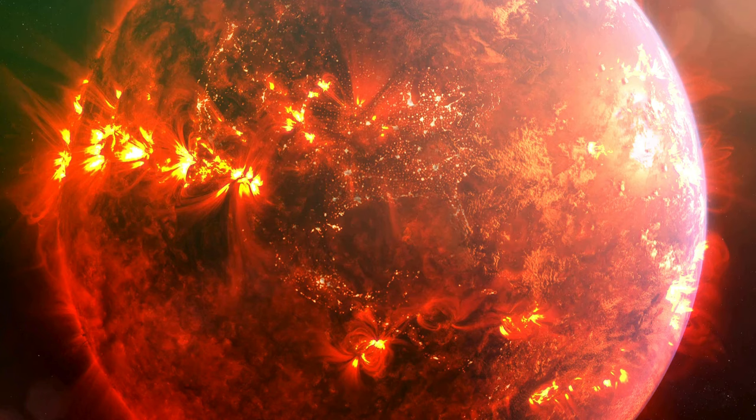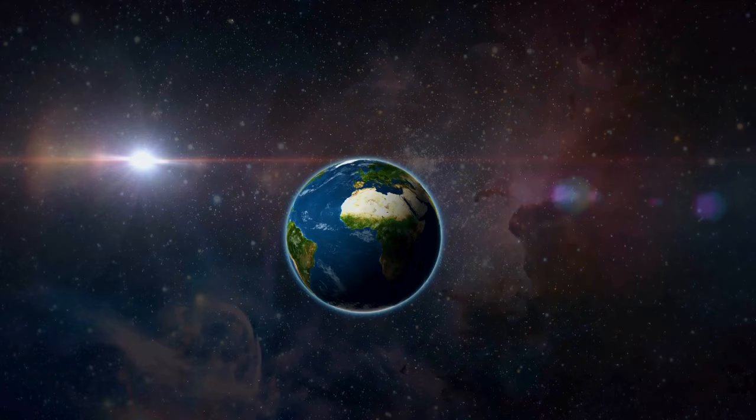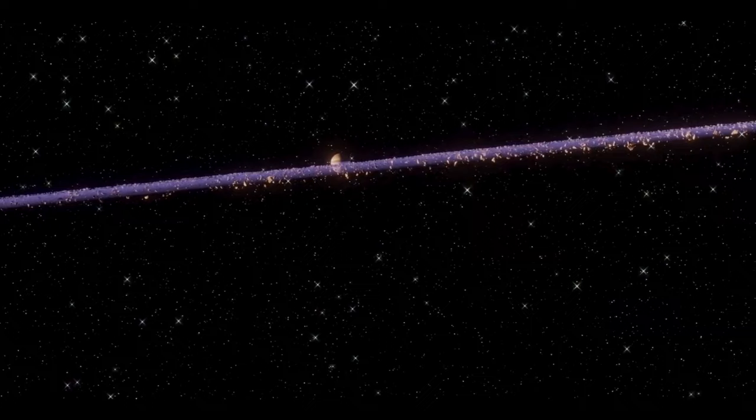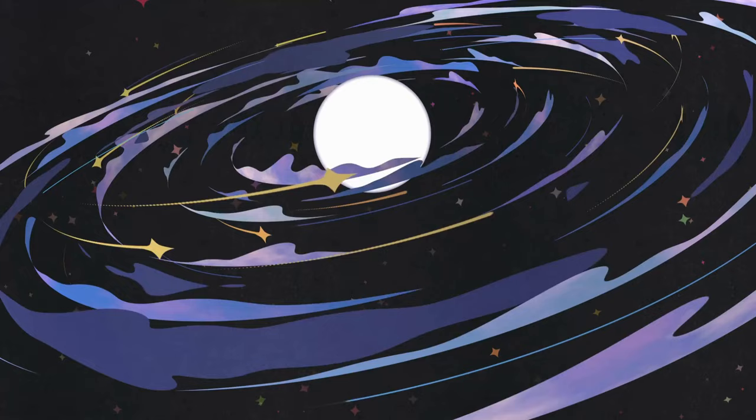Every day, Earth is playing dodgeball with asteroids and meteors of all shapes and sizes. NASA says we're treated to a celestial light show as hundreds of space rocks blaze into our atmosphere daily. Even smaller ones, like car-sized asteroids, manage to sneak a hit on our planet at least once a year, causing a bit of a problem locally.